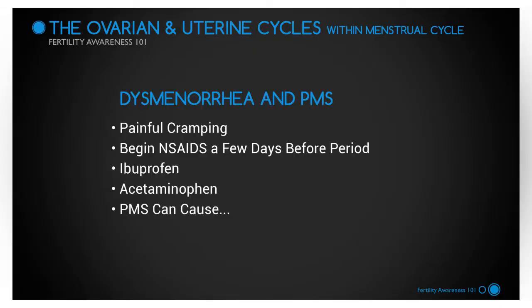Menstruation usually lasts three to seven days, or an average of five days during a 28-day cycle. Painful cramping in the abdomen, back, and upper thighs is common during the first few days of menstruation. Severe uterine pain, known as dysmenorrhea, is common in younger women and especially adolescents. A woman who charts her cycle will know exactly when to take non-steroidal anti-inflammatories like ibuprofen a few days before her period to help ease the pain.